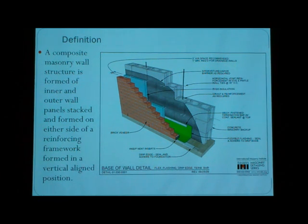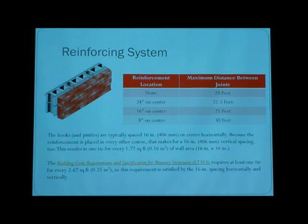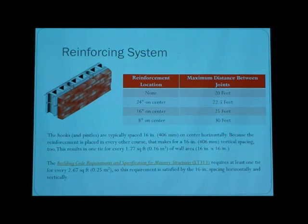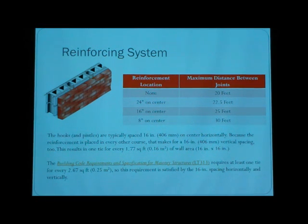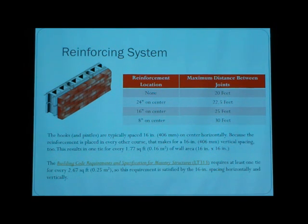The hook and pinhole ties are typically spaced 16 inches on center horizontally and vertically. This results in one tie for every 1.77 square feet of wall area. The code specification for this structure is LT313, and it requires at least one tie for every 2.67 square feet. We can see that this requirement is satisfied. We can typically use the one which is 16 by 16 square inch tie. This chart gives us the relationship between the reinforcement location and the maximum distance between joints.